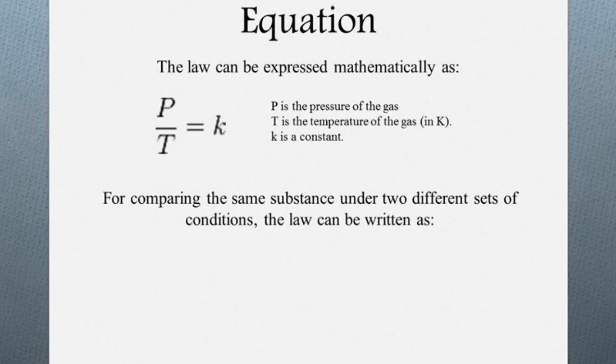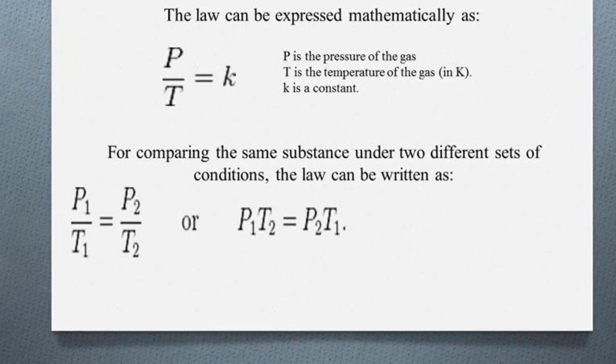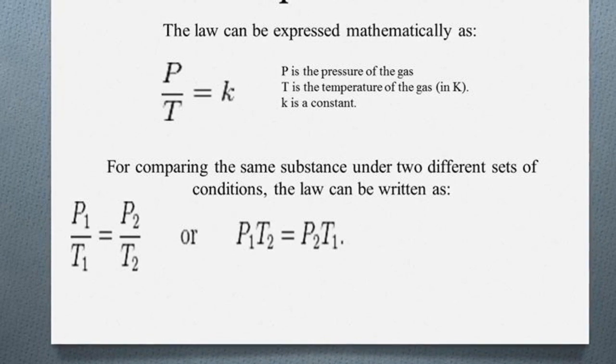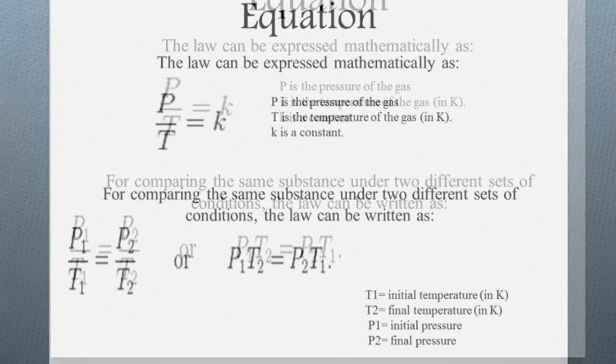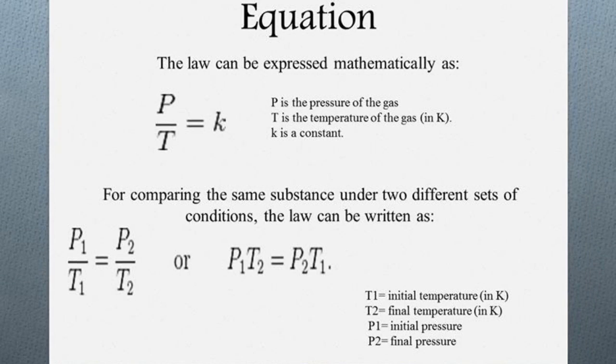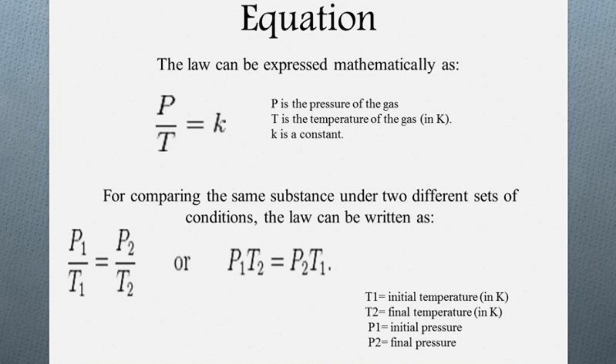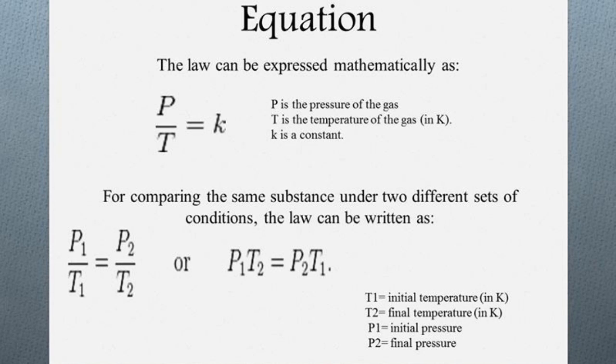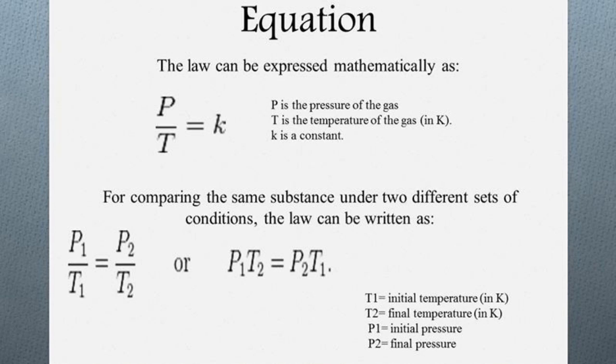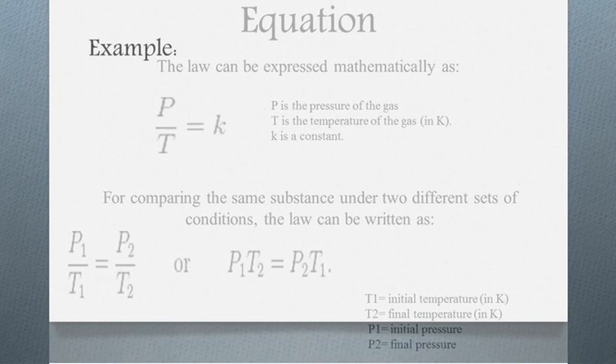For comparing the same substance under two different sets of conditions, the law can be written as P1 over T1 equals P2 over T2, where T1 represents the initial temperature in K, T2 represents the final temperature in K, P1 represents the initial pressure, and P2 represents the final pressure.